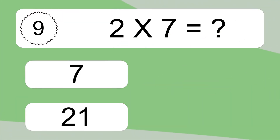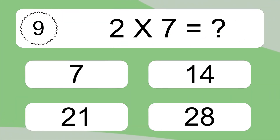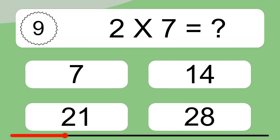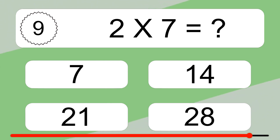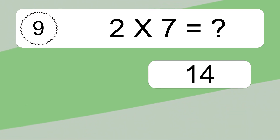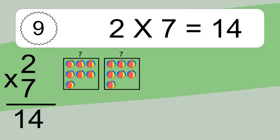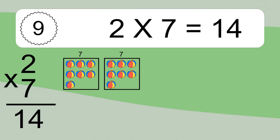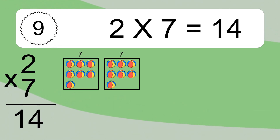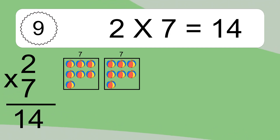2 times 7 equals what? 2 times 7 equals 14. We have 2 boxes, and each box has 7 colorful balls inside. If you count all the balls in all the boxes together, you will have 2 times 7 balls. This equals 14 balls.